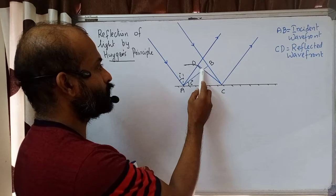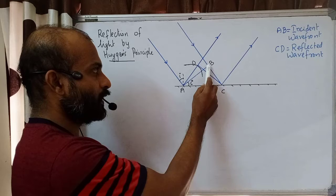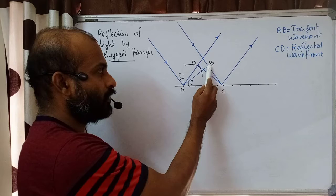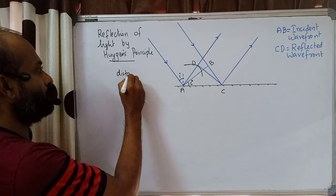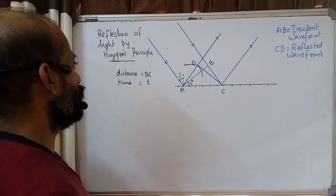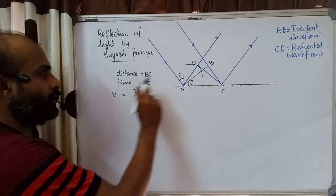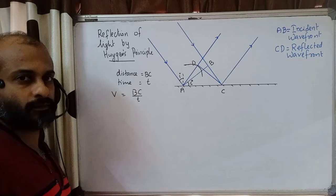According to Huygens principle, each point on the incident wavefront acts as a source of secondary wavelets. From point B, the wavelets travel a distance equal to BC. At the same time, the wavelets at point A have already struck the mirror surface and will start to reflect. Let T be the time taken to travel distance BC, and let V be the speed of light, so V = BC / T.